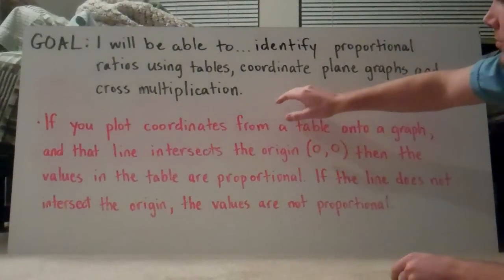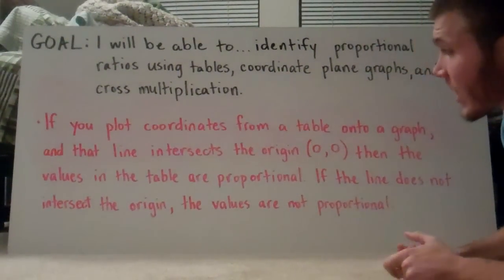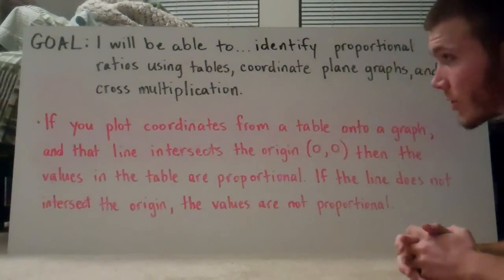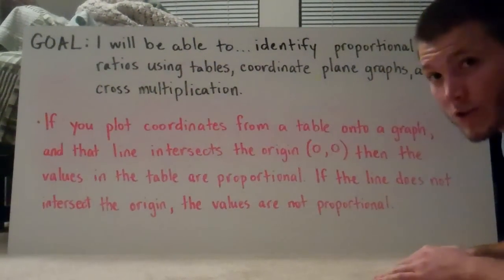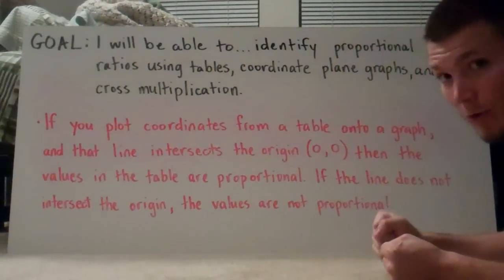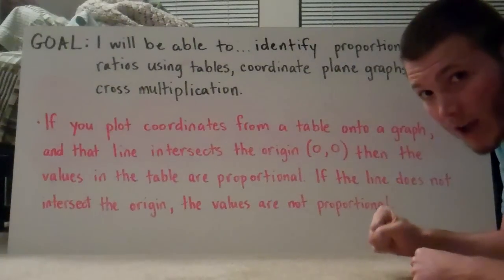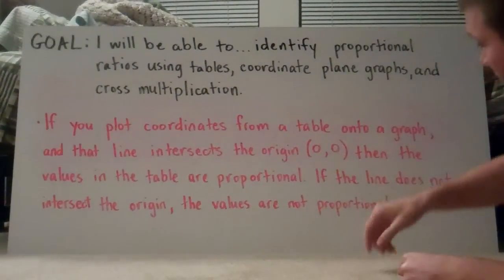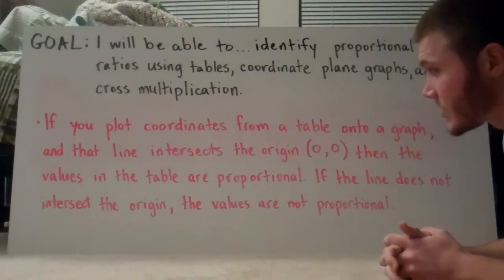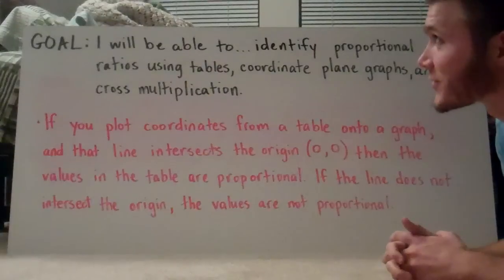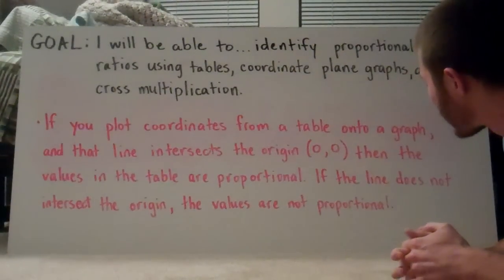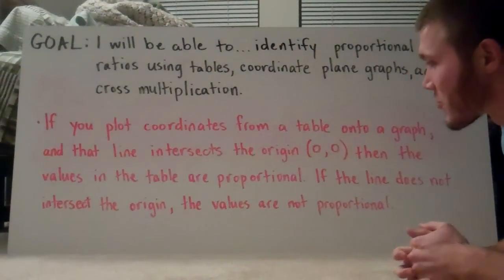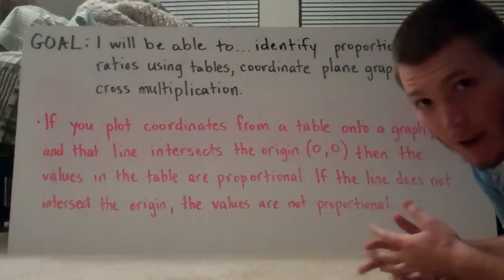So something you want to remember. If you plot coordinates from a table onto a graph and that line intersects the origin, that's the 0,0 point where x is zero and y is zero, then the values in the table are proportional. If the line does not intersect the origin, the values are not proportional.